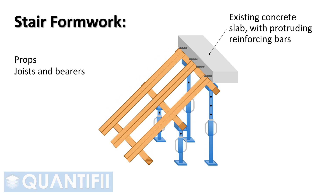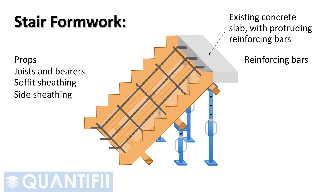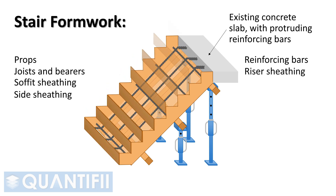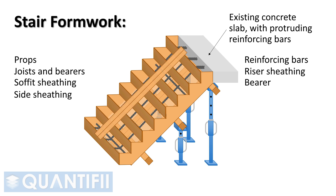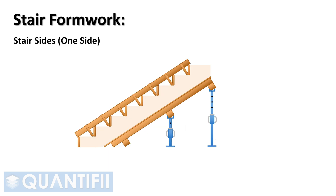Let's work through the 3D sketch of a concrete staircase. Firstly, props form the base support of the stair soffit formwork. Next, we build up the joists, bearers, and plywood. Formwork to the sides of the stairs follows. Reinforcing is then fixed into position. Next, the riser formwork, bearer, and stays are fixed into position. Lastly, we pour the concrete into the form, creating our staircase.